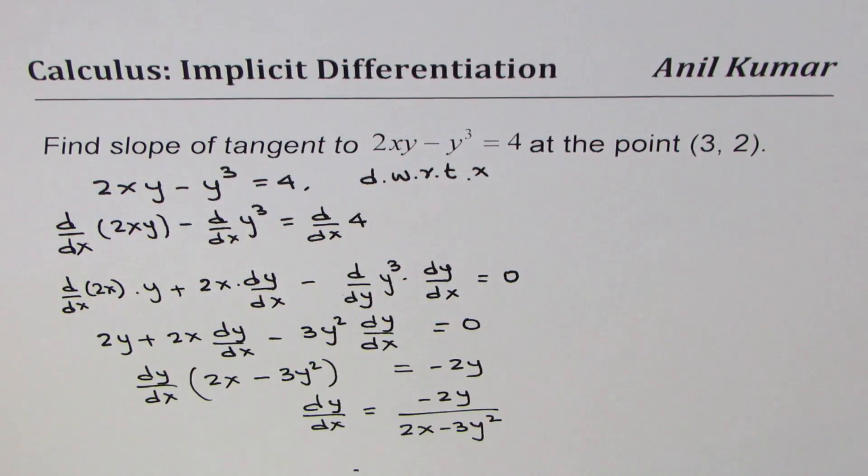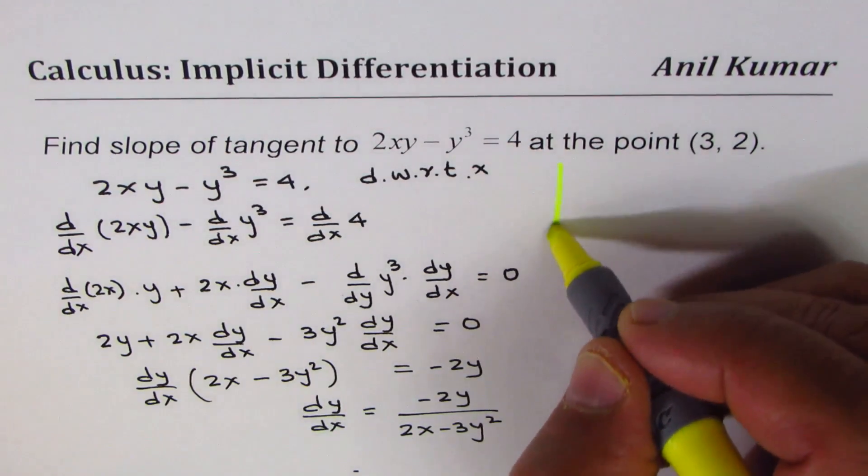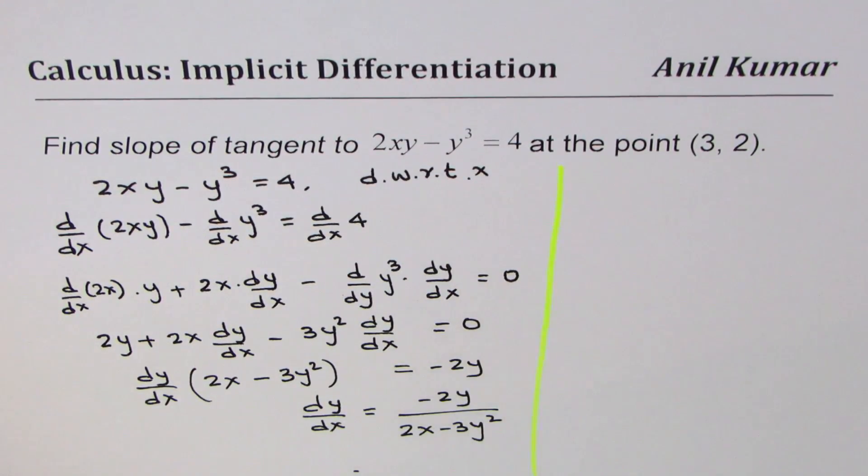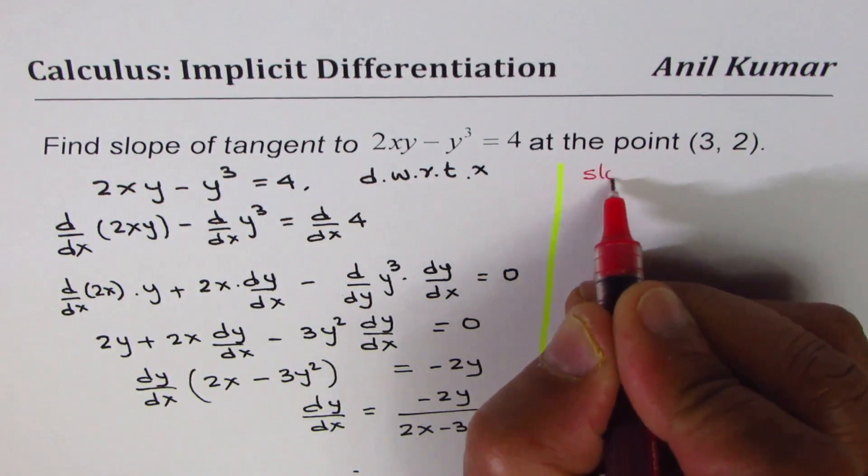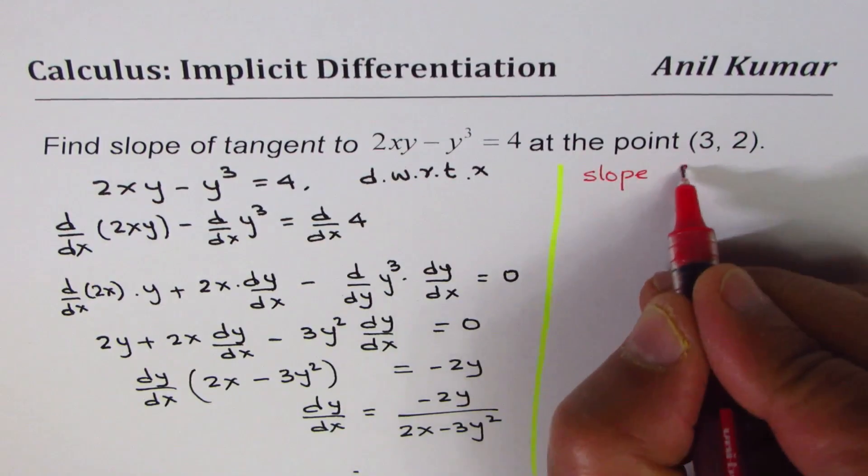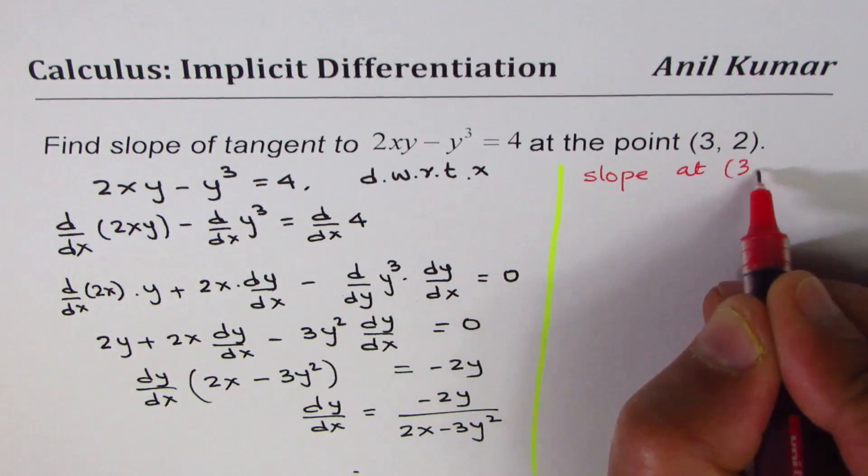Now we need to find the slope of the tangent line at the given point. Let's do that part now. We have already found the derivative. Now let's find the slope at (3, 2).